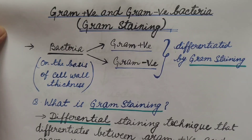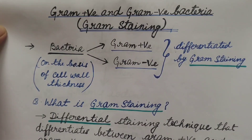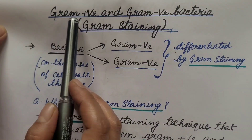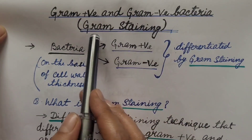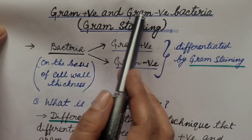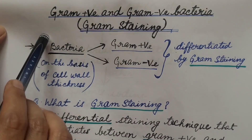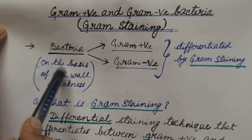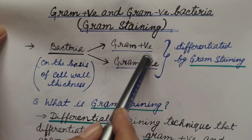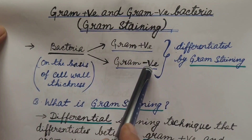Hello friends. In the previous video we discussed about bacterial cell wall structure — the general cell wall structure of bacteria and the role and function of the bacterial cell wall. You can refer to that video; the link is given in the description box. In this video we are going to discuss about gram positive and gram negative bacteria, and also the method of gram staining. Bacteria is of two types on the basis of cell wall thickness: gram positive bacteria and gram negative bacteria.